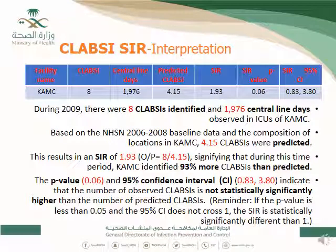To summarize the result: the hospital has 8 observed CLABSI events against 4.15 predicted events, giving a SIR of 1.93 — meaning 93% higher than NHSN. Additionally, statistical programs can calculate a p-value and confidence interval for the SIR. The amount of difference is captured by the SIR value itself: 1 means equal, above 1 means higher, below 1 means lower.